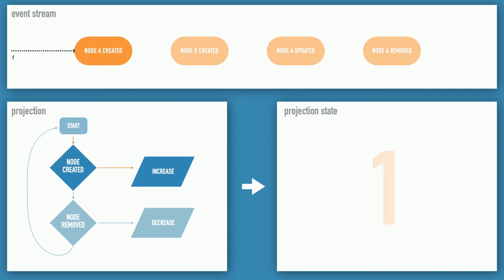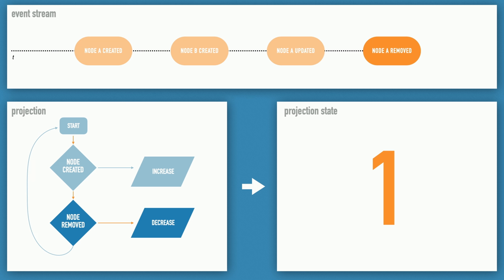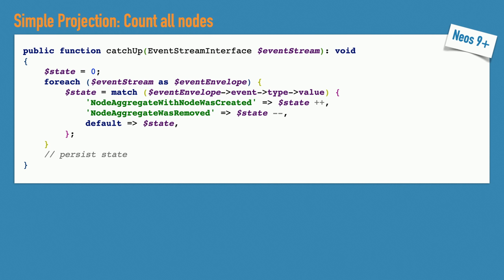If we start the simulation and come across a node creation event, we increase the counter by one. Another creation event — we increase it again. We're not interested in updates, so we ignore those. For a node deletion, we decrease the counter. So we know at any point in time how many nodes were in the system. In code, every projection of the new content repository will have a catch-up method that gets the event stream passed, and then you can iterate through the event stream and update the state accordingly.